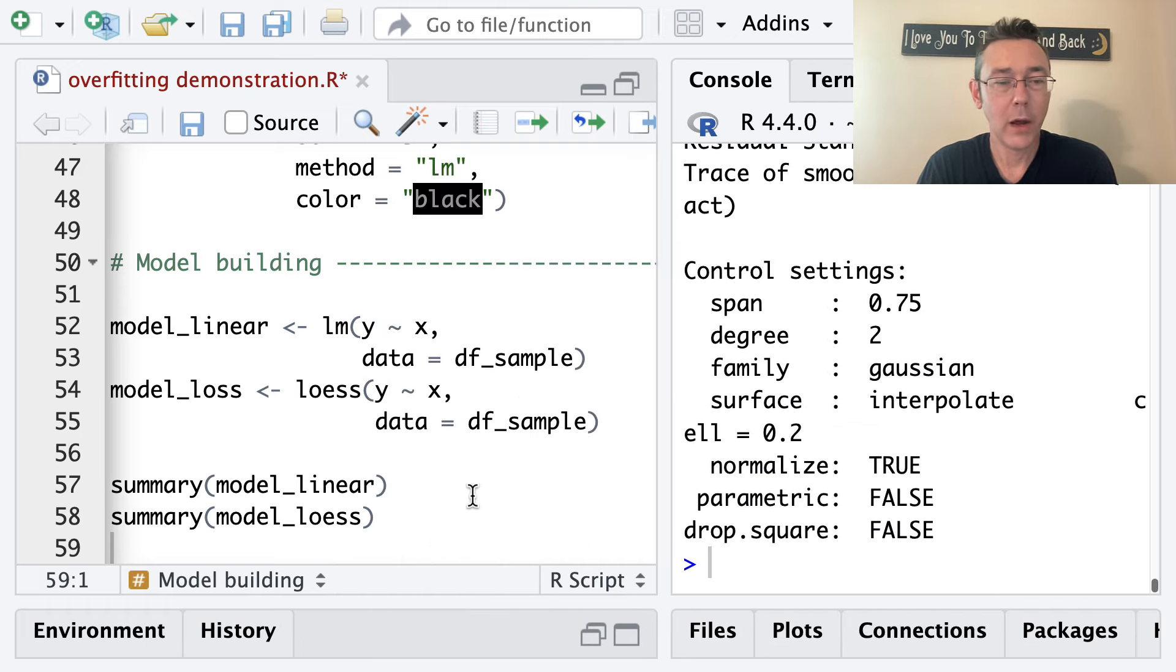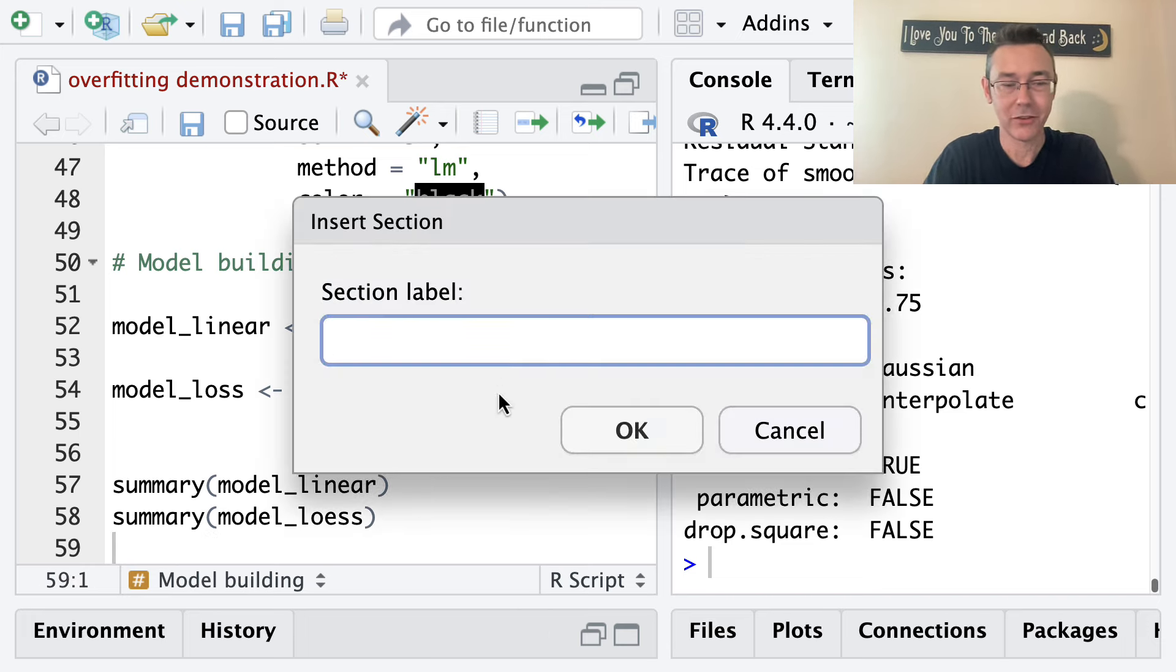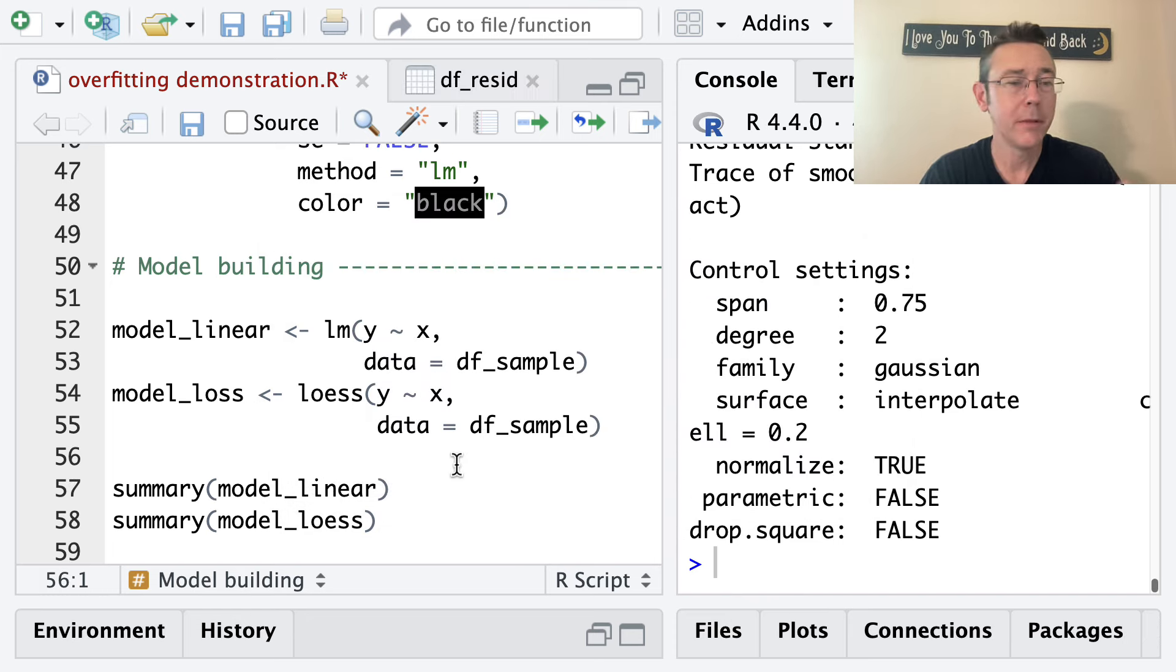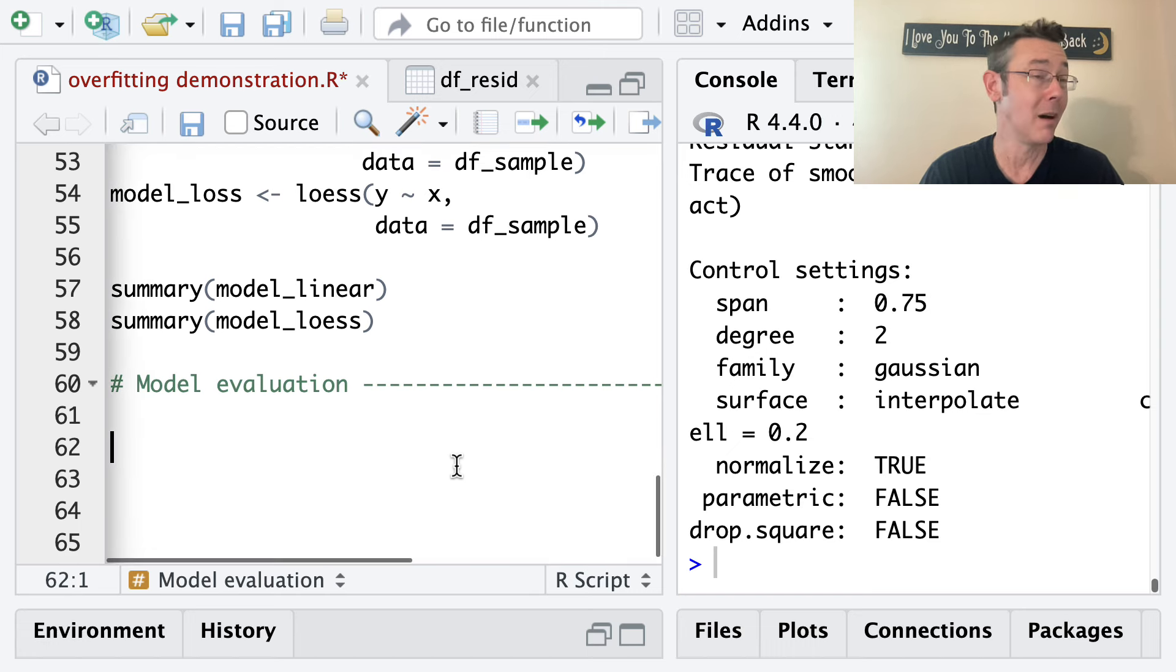All right, so the next thing I want to do, actually accidentally put in a pipe instead of a new section, let's do some model evaluation. Now, I'm going to be evaluating these models on population data. In this video, I actually have access to population data. Of course, in the real world, that's typically not the case. You're building a model specifically because you don't have population data. So in a minute, I'm going to say a word about what we should do to evaluate a model when we don't have access to such things.